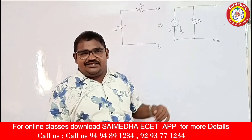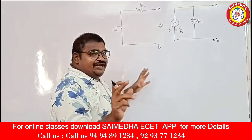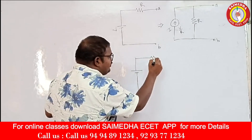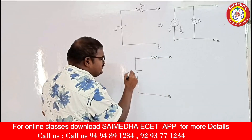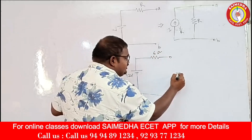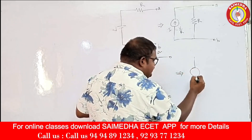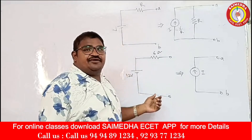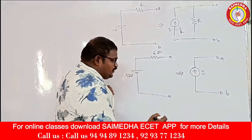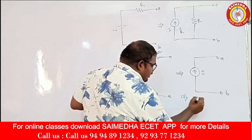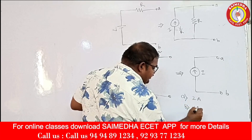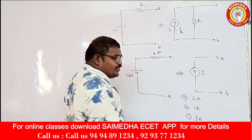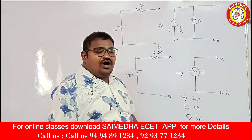In an examination, they won't ask it so directly. They will ask: find out the current for the circuit as shown in the figure. They will give a circuit with, say, 12 volts and 6 ohms, and ask you to find the current. The options given will be: Option A — 2 amperes, Option B — 1 ampere, Option C — 3 amperes, Option D — none of the above.